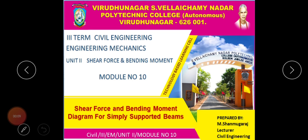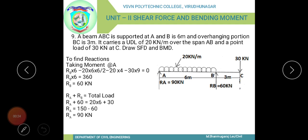Engineering mechanics, module number 10: shear force and bending moment diagram for an overhanging beam. A beam ABC is supported at A and B over a span of 6 meters, with an overhanging portion BC of 3 meters. It carries a UDL of 20 kilonewton per meter over span AB and a point load of 30 kilonewton at C.